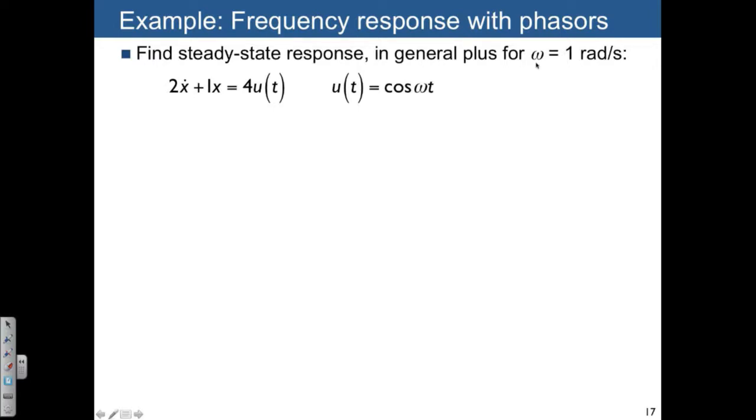The first thing we want to do is describe the transfer function. The transfer function is just the output divided by the input, where we're using s notation. If we solve for (2s + 1)x = 4u, then x/u is just going to be 4/(2s + 1).